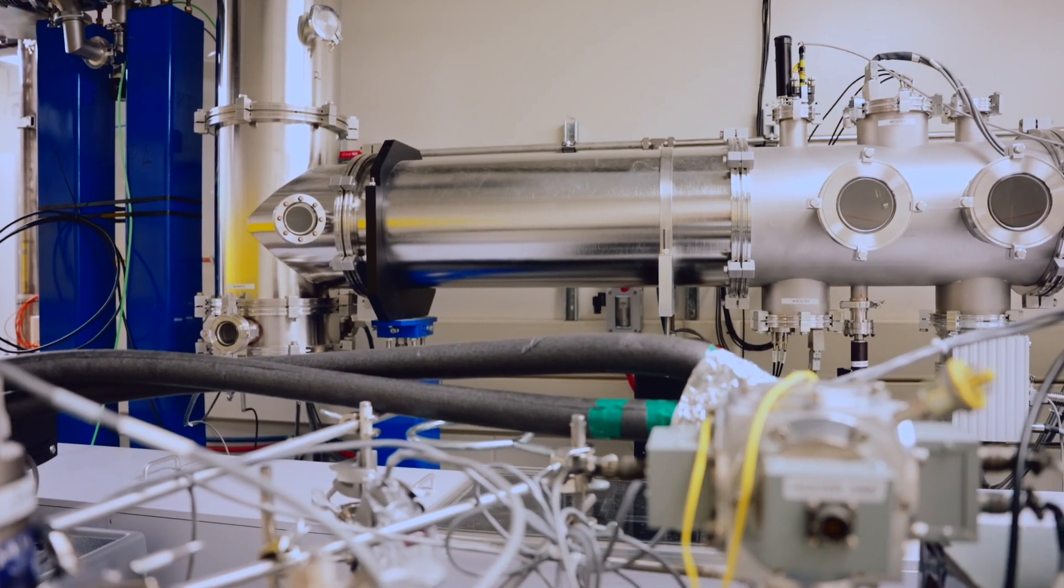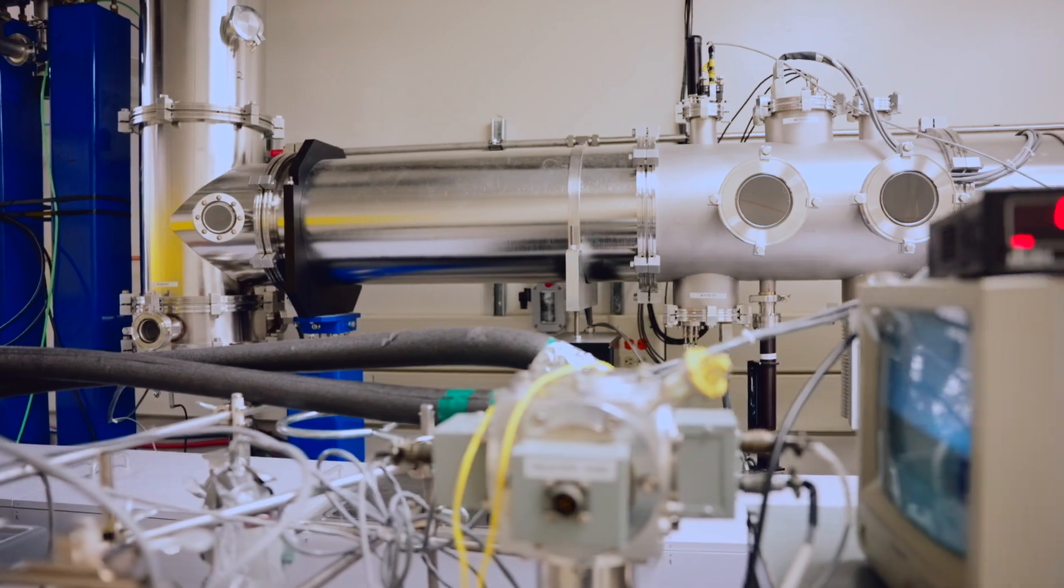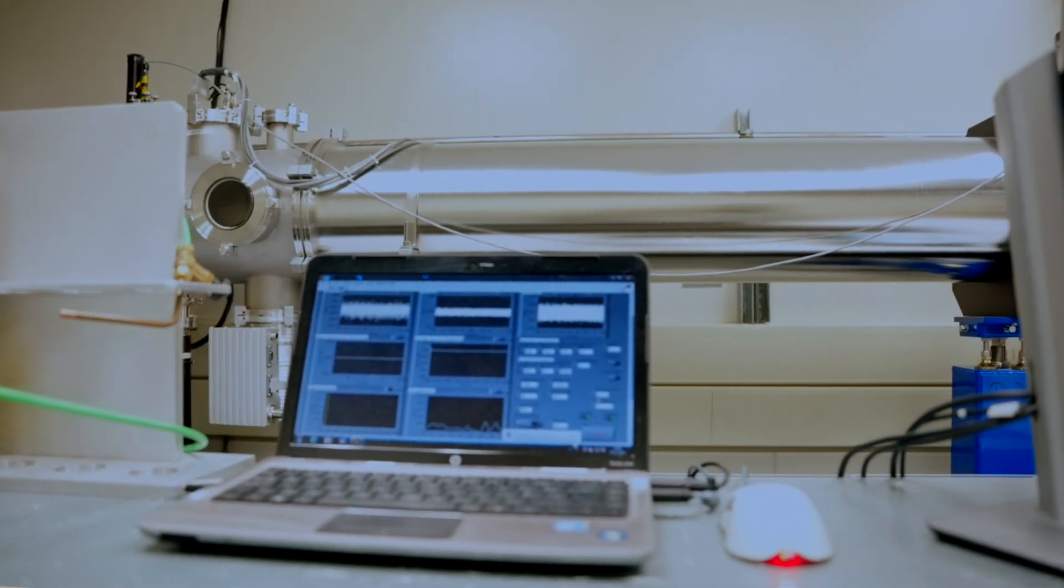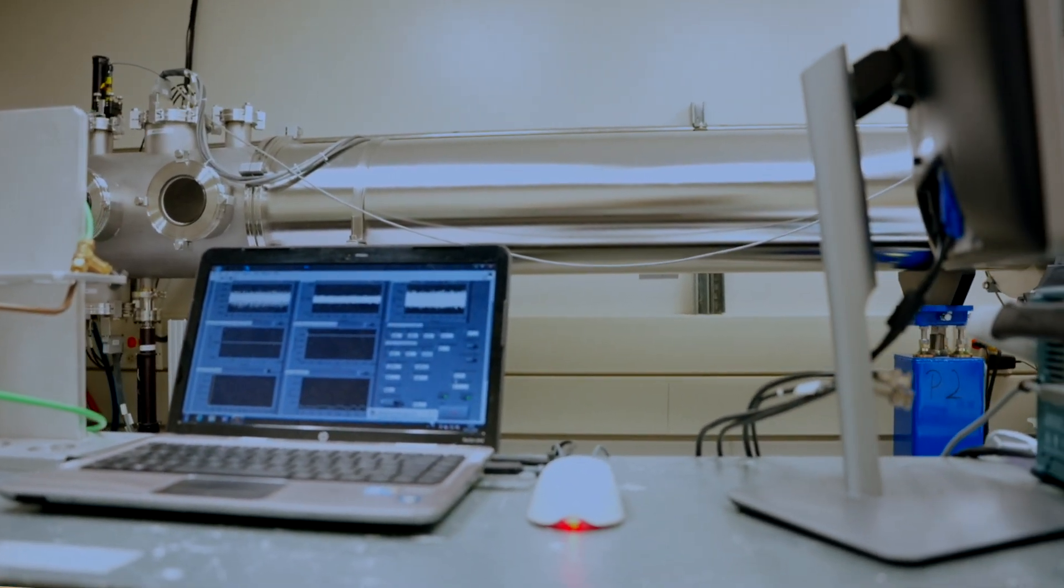In conjunction with that we have a long pass gas cell which was made by NRC. It has a pass length of up to 72 meters, so we can have very low pressures of gases inside, which allows us to take advantage of that high resolution.